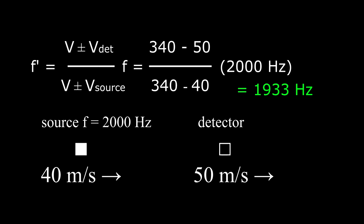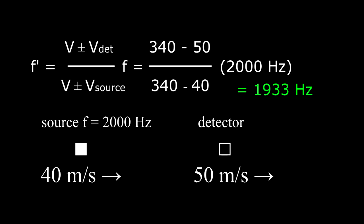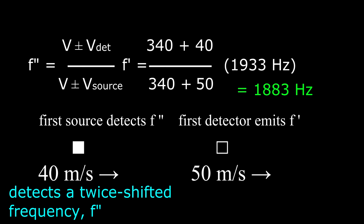For one last point: when the sound waves from a source encounter the material of the detector — say, the surface of a car — that surface is made to oscillate with the Doppler shifted frequency f prime. The oscillating surface in turn radiates its own sound, and now it is acting as the source. The original source detects a return frequency that has been twice shifted, which you might write as f double prime, but now the roles of source and detector have been swapped.